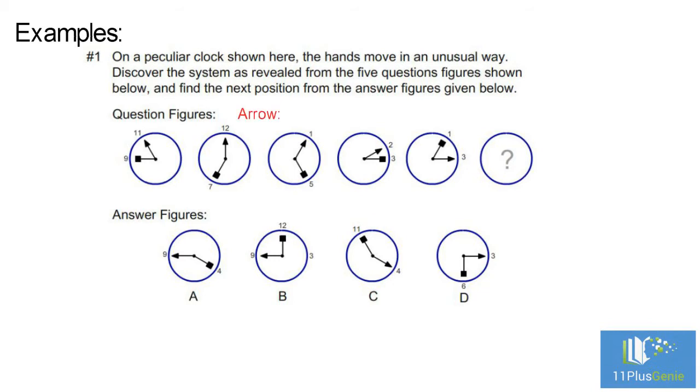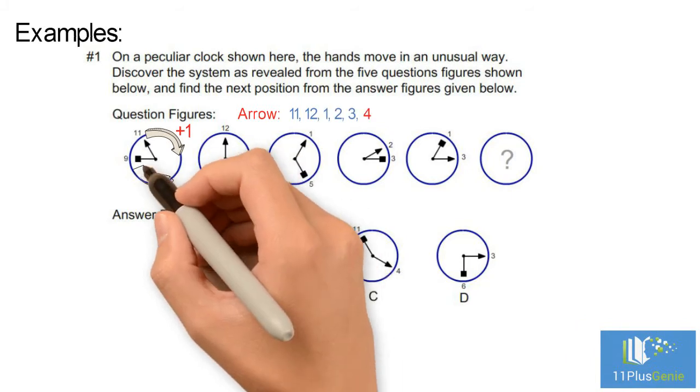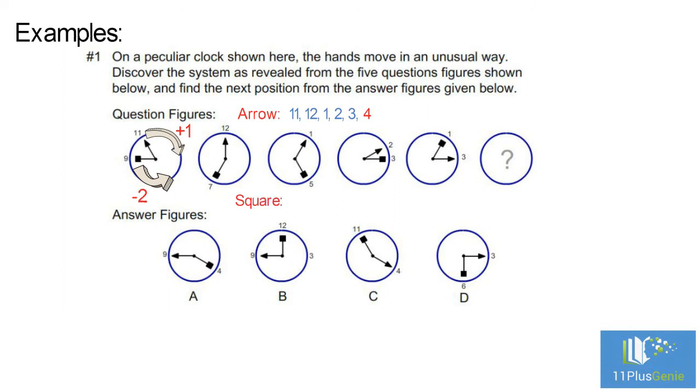The hand with the arrow moves clockwise one hour at a time, so on the next clock it must be at four. The hand with the square moves anti-clockwise two hours at a time, so on the next clock it must be at eleven. The correct answer is C.